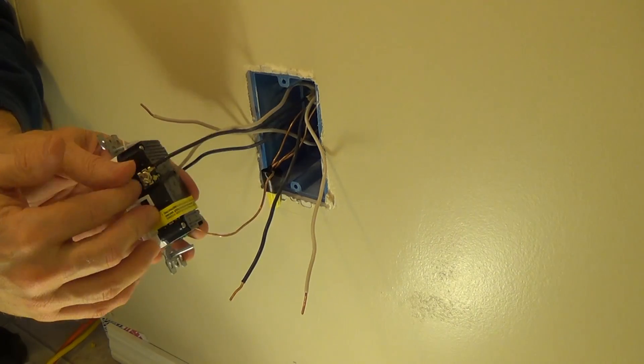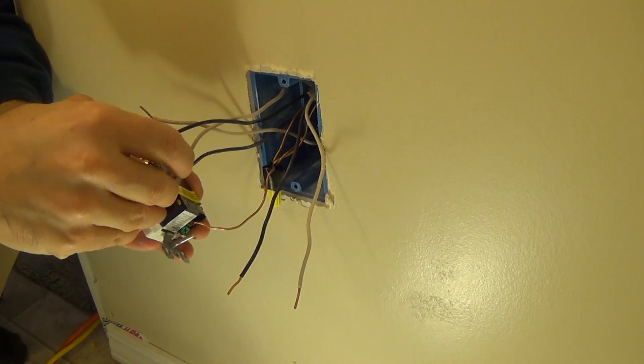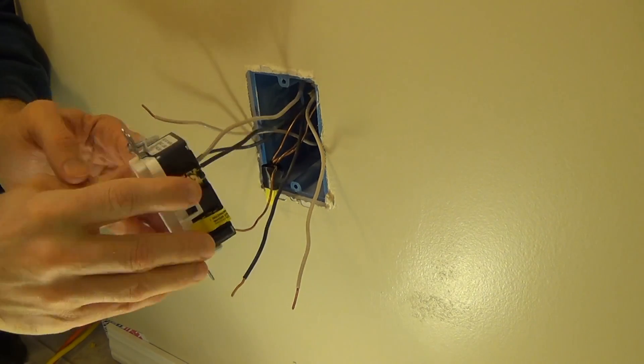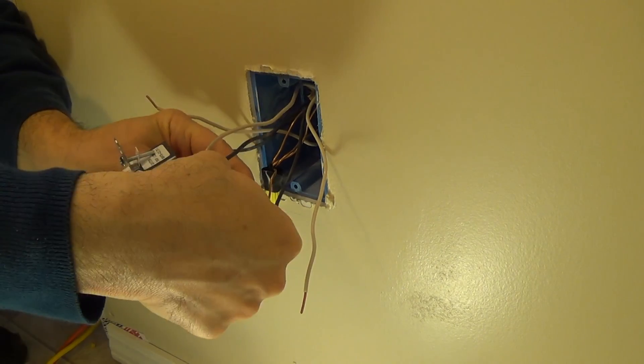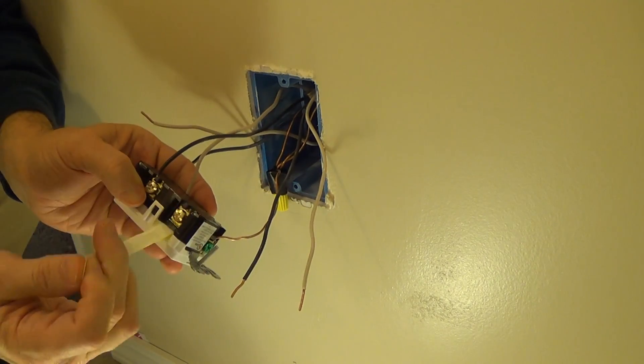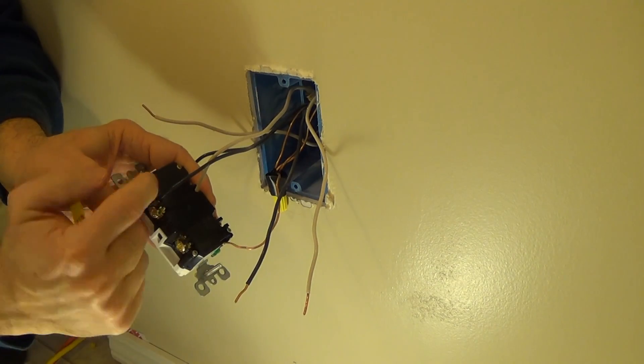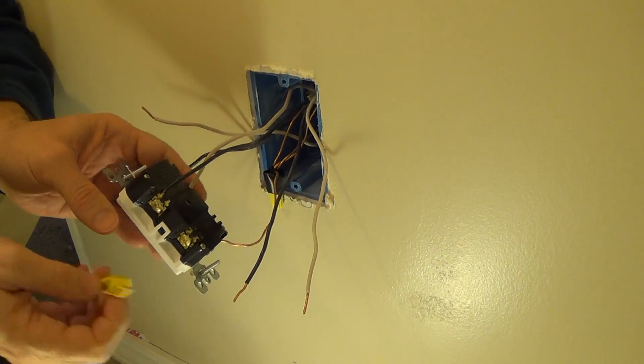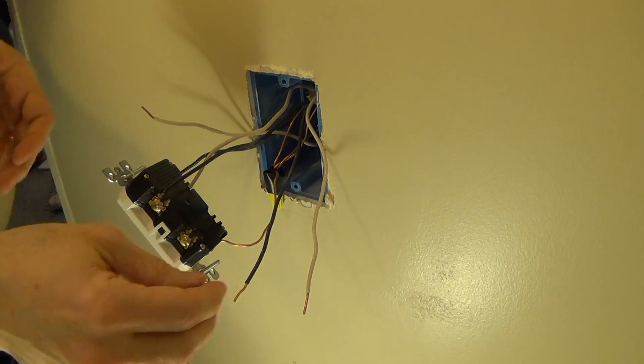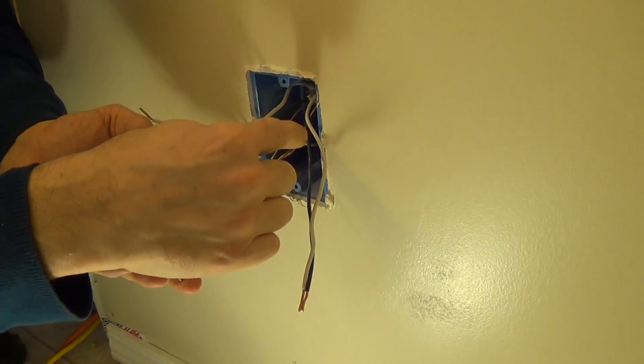And only now that we know those are in securely, let's go ahead and take this yellow tape off. These are exposing the load terminals, and it actually says right here line and then load. You could actually read it right here on the receptacle.